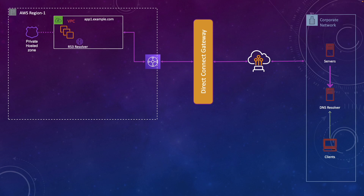Let's start with our first example where I have my application running in one of my regions in my VPC — app1.example.com — and my corporate network servers need to resolve this DNS. So we create a Route 53 resolver inbound endpoint, which creates an ENI in my VPC. We update our DNS server on the corporate site, and any request from clients in the corporate network goes to the DNS server, which forwards it to the endpoint IP address. The inbound endpoint resolves it using the private hosted zone associated with the VPC and sends the IP address back.